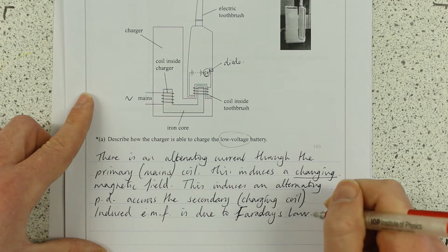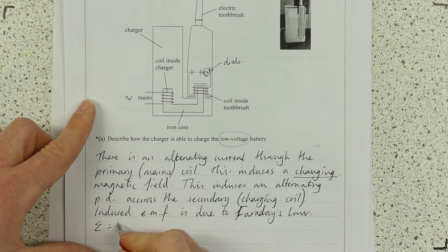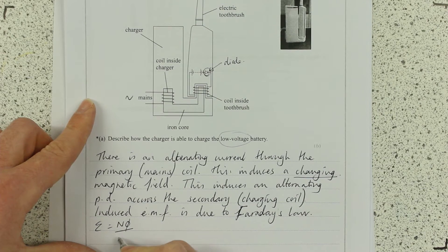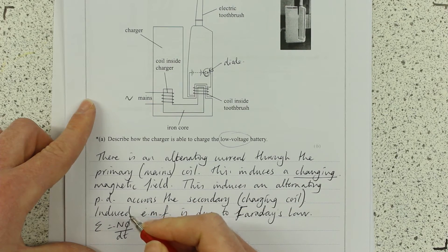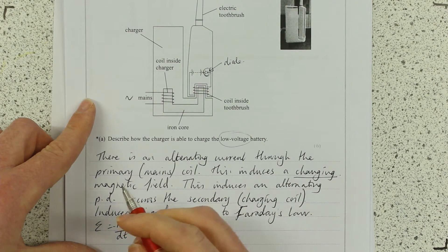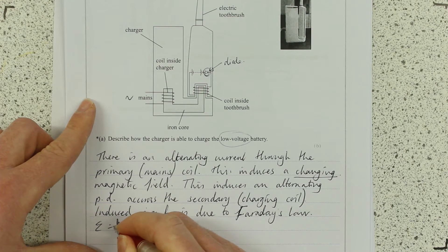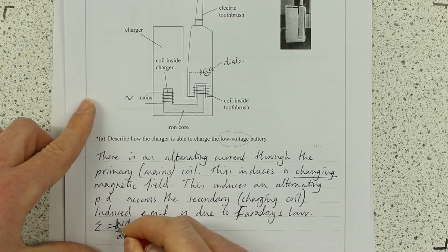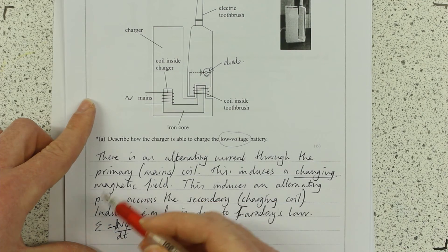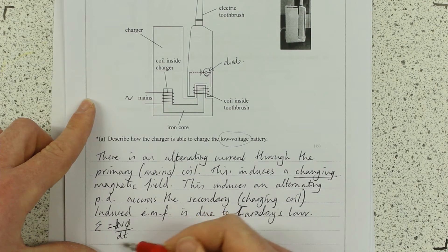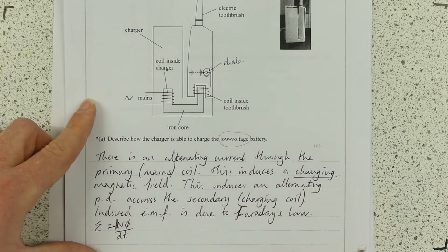Basically, now you've said that, you can actually write that down. Yep, I'll put a little D there as well. EMF is minus dN phi over dt. So, the EMF is proportional to the rate of change of flux linkage.